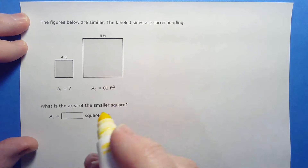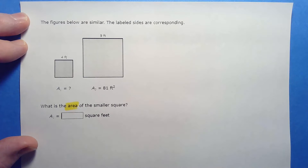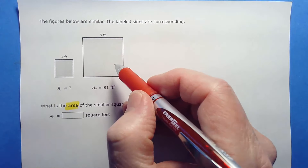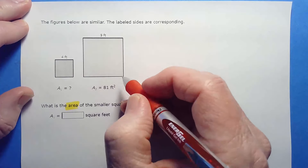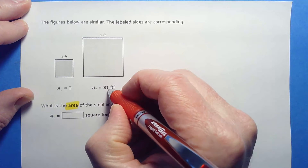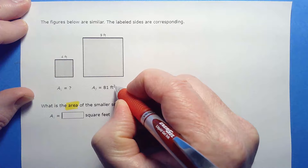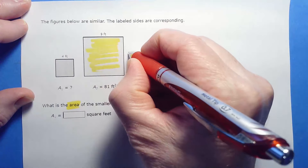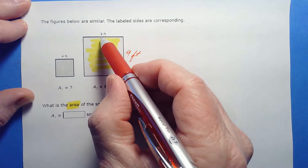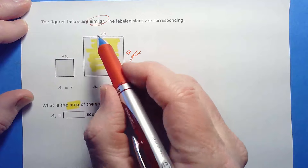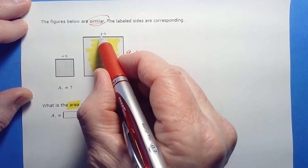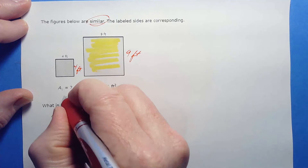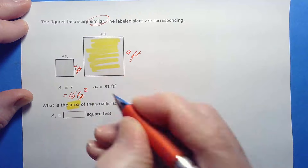Now we've got a different kind of problem — this time we're talking about area, not perimeter. This looks like a square with area 81 feet squared. The squared units confirm it's an area. If it's a square, then each side would be nine feet. They're similar, so the ratio of all sides must be the same: nine goes to four. So the area of the smaller square would be four times four, which is 16 feet squared.